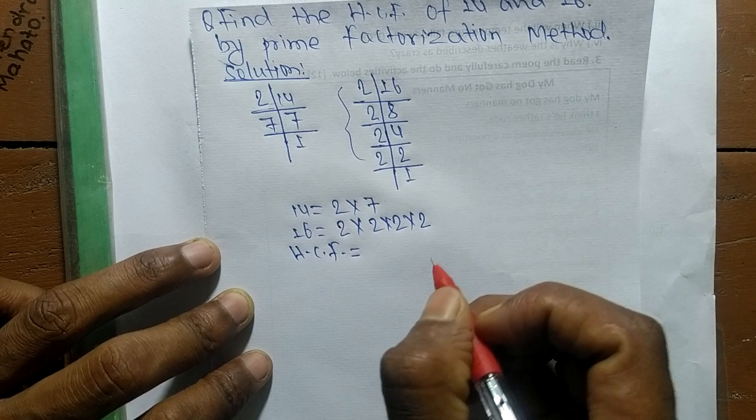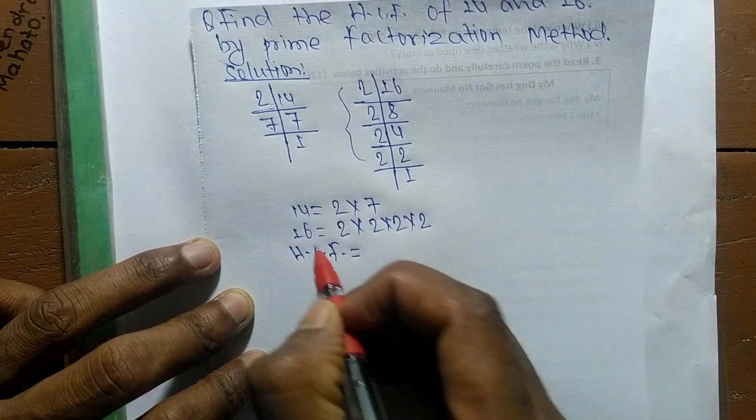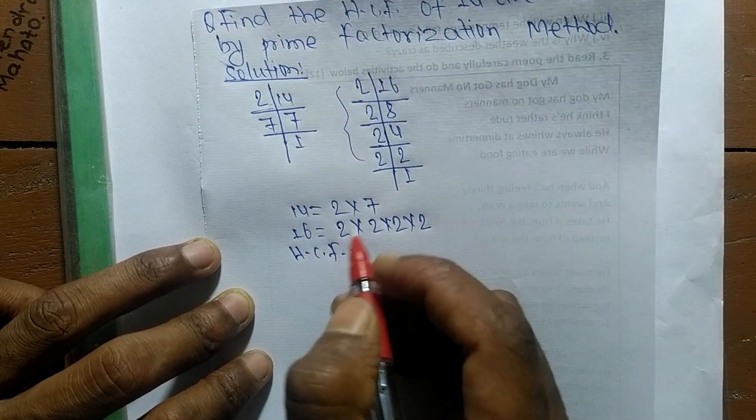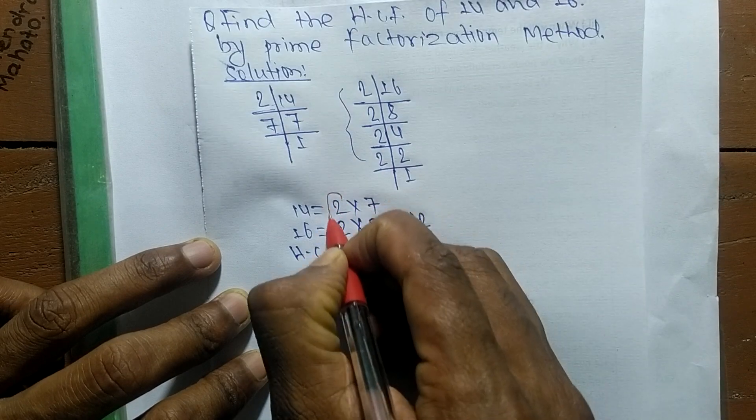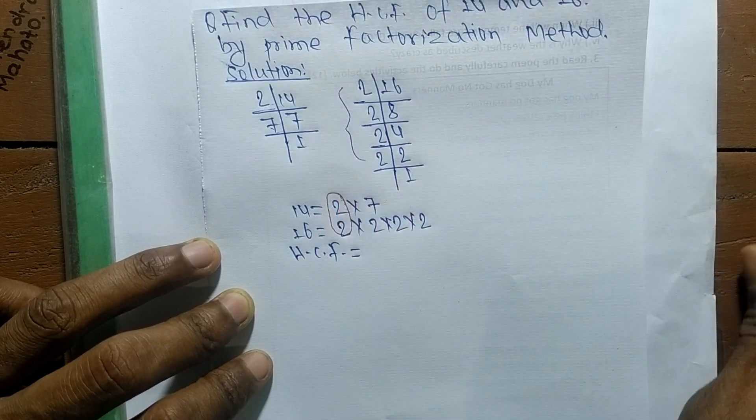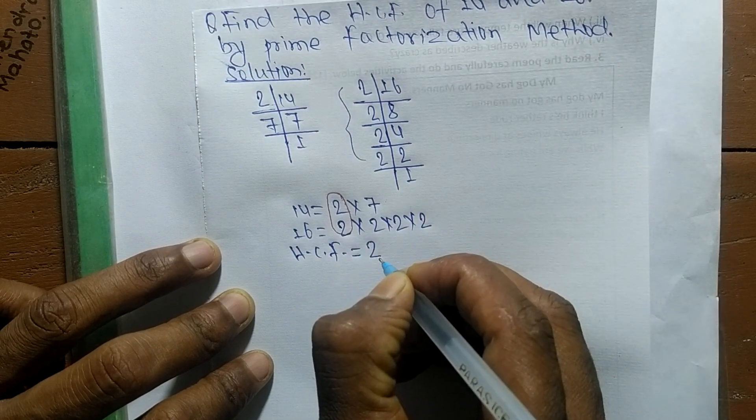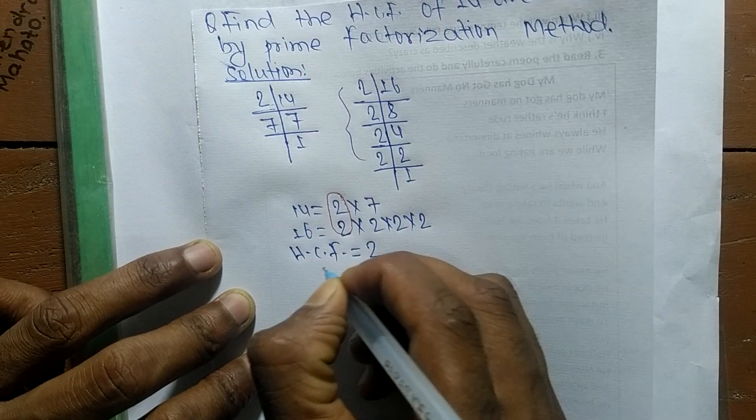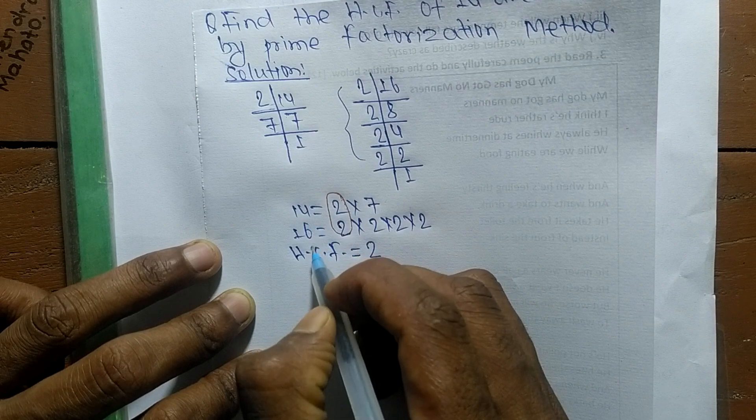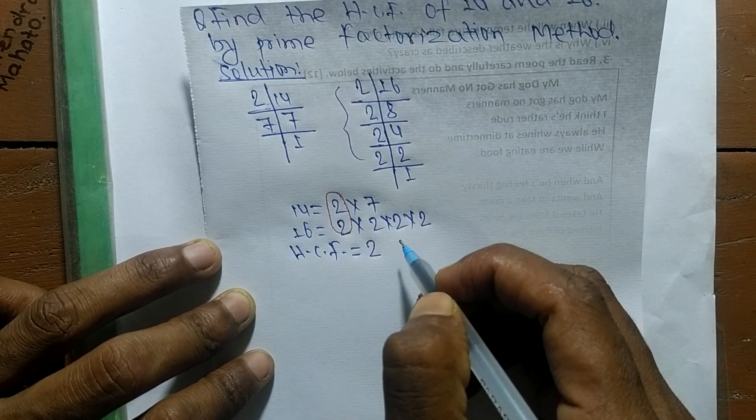The common factor here is 2, so its HCF is equal to 2. So 2 is the highest common factor of 14 and 16.